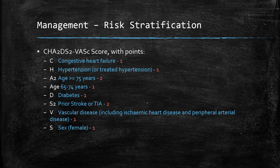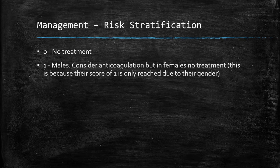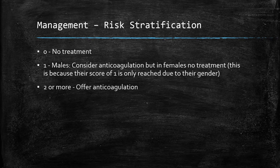The CHADS-VASc scoring system: congestive heart failure scores one point; hypertension scores one point; age greater than 75 gives two points; age between 65 and 74 scores one point; D is for diabetes; S is for stroke or TIA; V is for vascular disease; and being female scores an automatic one point. A score of zero requires no treatment, a score of one in males means anticoagulation should be considered, and a score of two or more means the patient needs anticoagulation.